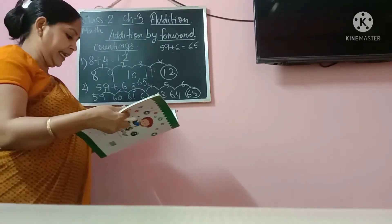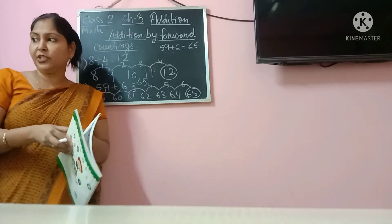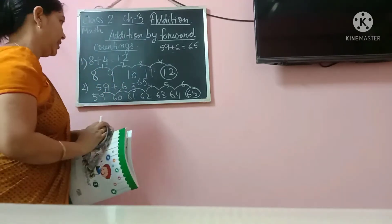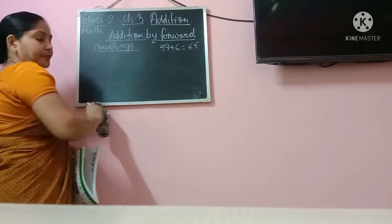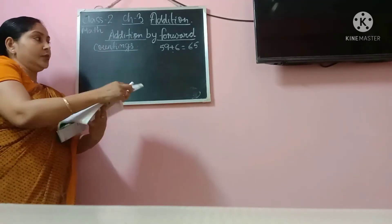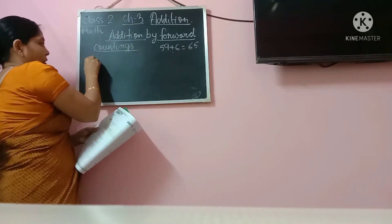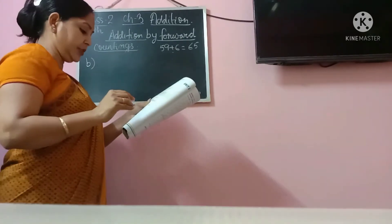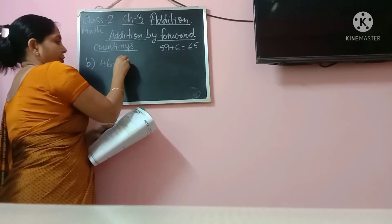So on page number 38, the first question is 'add by forward counting.' The first question is already done for you and I am going to start with the second question. So the second one is number B on page number 38. The question given is 46 plus 4.